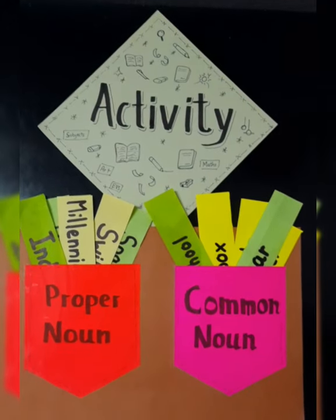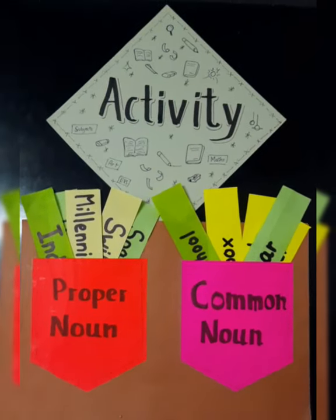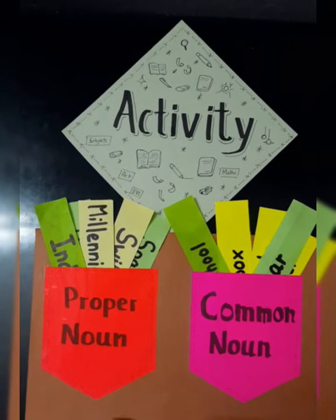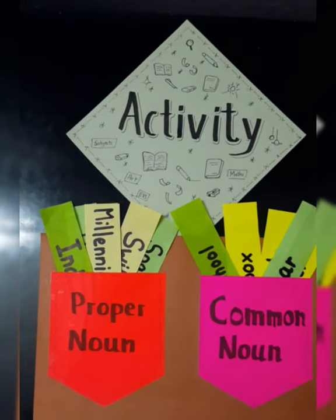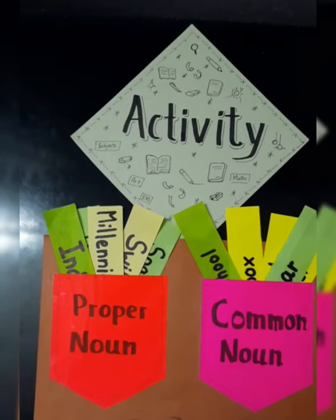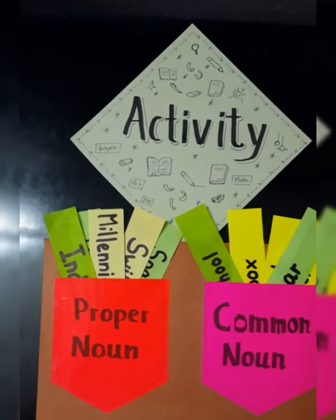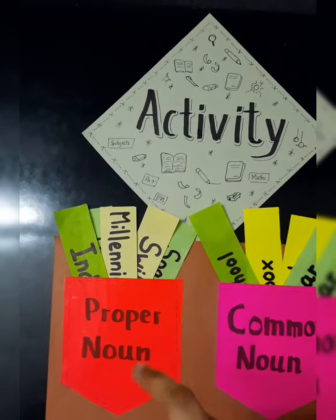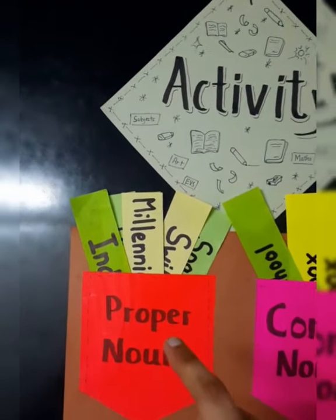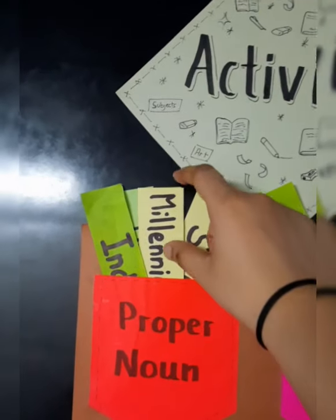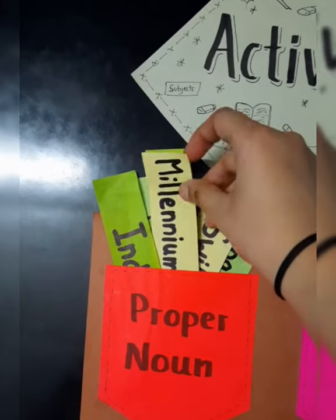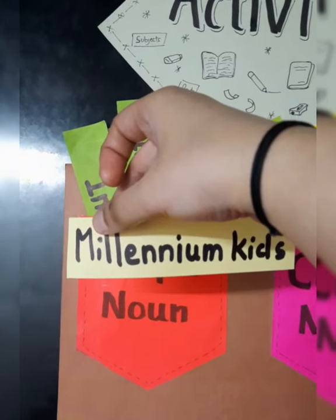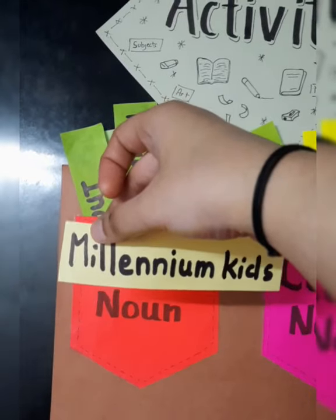Let us talk about proper noun. Special names of persons, places, animals, or things are called proper nouns. Kisi bhi places, persons, animals ya things ke special name ko hama proper noun. One important thing — proper noun always starts with a capital letter, as you can see 'Millennium Kids School' — M is capital. So proper noun always starts with the capital letter.